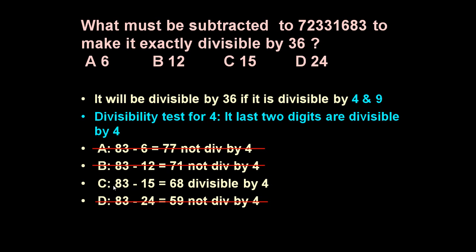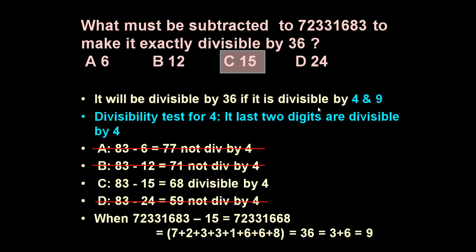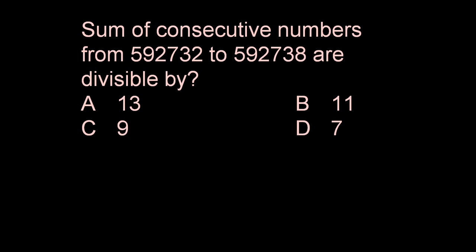Only option C is possible, but before giving the final answer let us verify it is also divisible by 9. When we subtract 15, the number becomes 72331668. Adding all digits: 7+2+3+3+1+6+6+8=36, and 3+6=9. So subtracting 15 makes the number divisible by both 4 and 9, meaning it is divisible by 36. The answer is C — subtract 15.